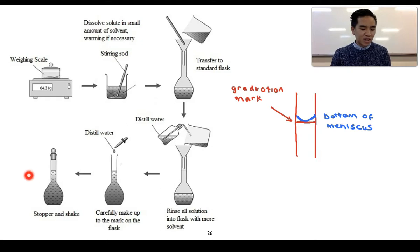Once we've done that and we've checked it, we then just stopper it and we can shake. Usually we just need to invert it once and then we just label our volumetric flask with things like the solution, the date prepared, concentration as well as our name.